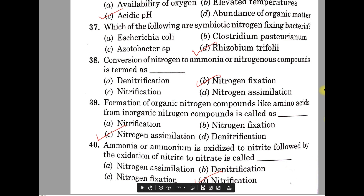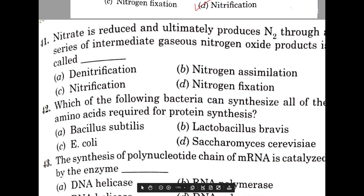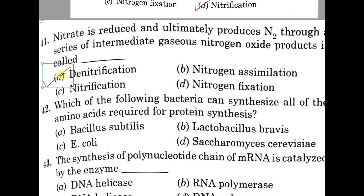Question number 41. Nitrate is reduced and ultimately produces nitrogen through a series of intermediate gaseous nitrogen oxide products. This process is called A: Denitrification, B: Nitrogen assimilation, C: Nitrification, D: Nitrogen fixation. This is called Denitrification. It is carried out by denitrifying bacteria like Bacillus, Enterobacter, Micrococcus, and Pseudomonas.